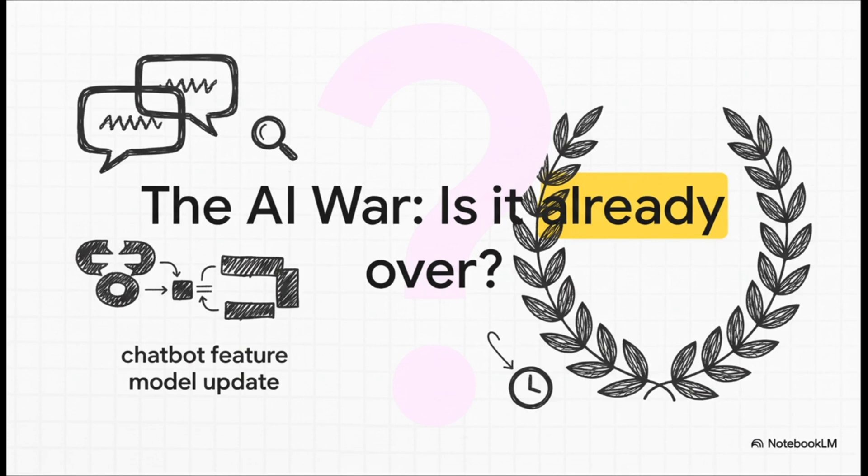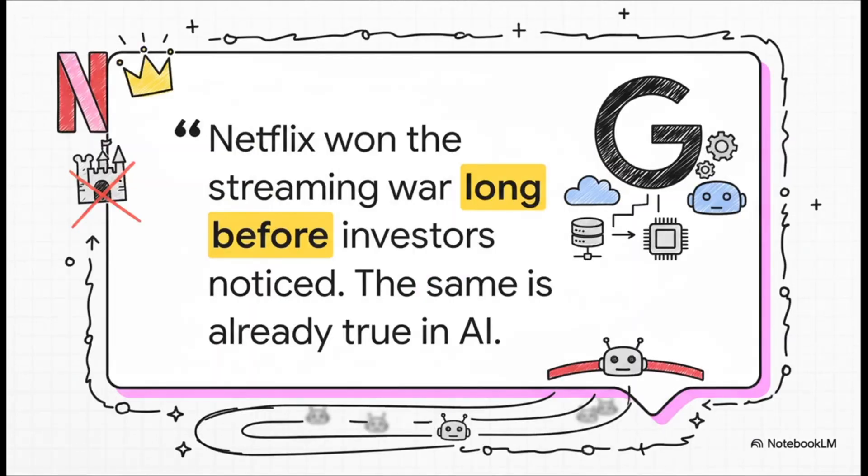So how on earth is that even possible? So this is the core idea, and it draws this amazing parallel to Netflix. Remember when everyone was freaking out thinking Disney Plus was going to be this huge threat? Well, by the time most people realized, Netflix's lead was basically unshakable, the war was over. The argument here is that we're watching the exact same movie play out with Alphabet and AI. And it's all just hiding in plain sight.